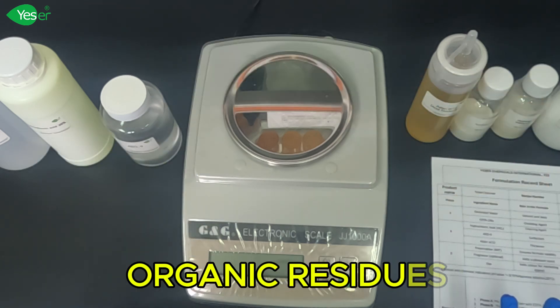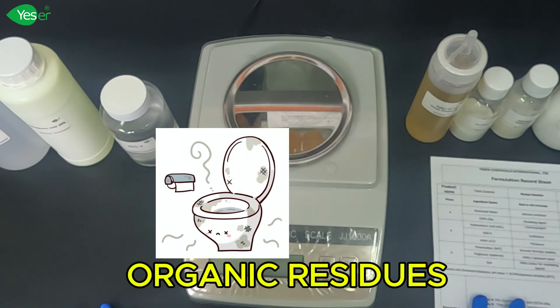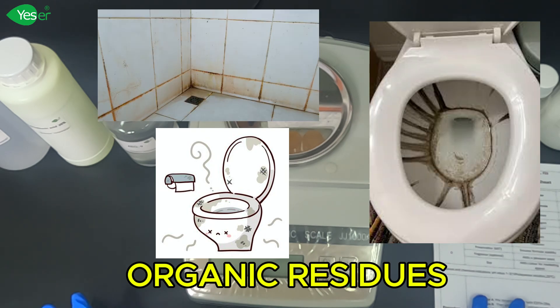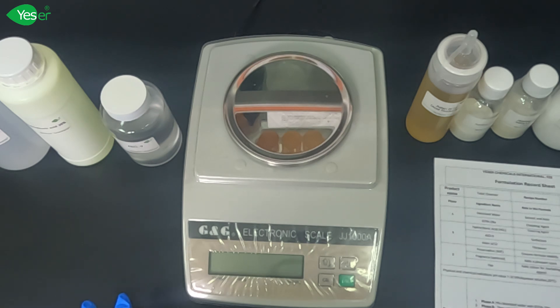Next is the organic residues like biological waste, mold, and soap scum. The stuff that makes your toilet look and smell bad. A great toilet cleaner dissolves these stains, lifts away residues, and leaves your toilet fresh and clean.